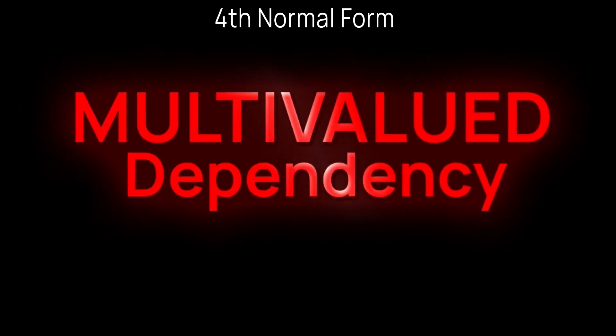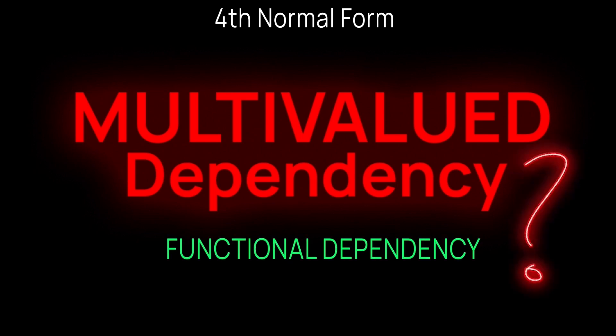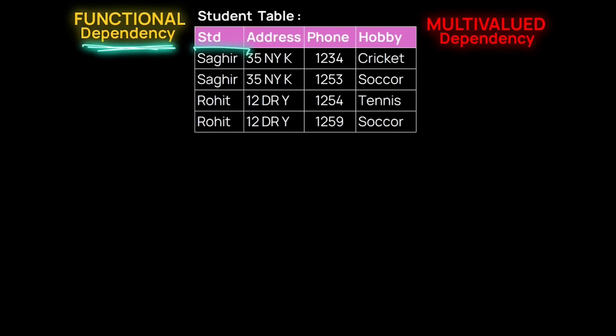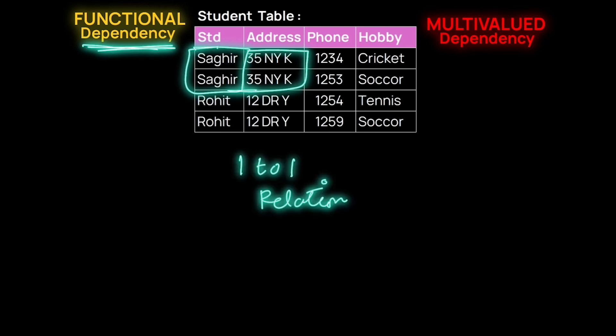Fourth normal form has its own multivalued dependency, but we also need perspective about functional dependency. From the student table, we can see a student has a functional dependency on address — for one value of the student attribute, there exists only one value of address. Address is not multivalued like phone number. A student has two phone numbers and two hobbies, but only one address. This one-to-one relation is called functional dependency.